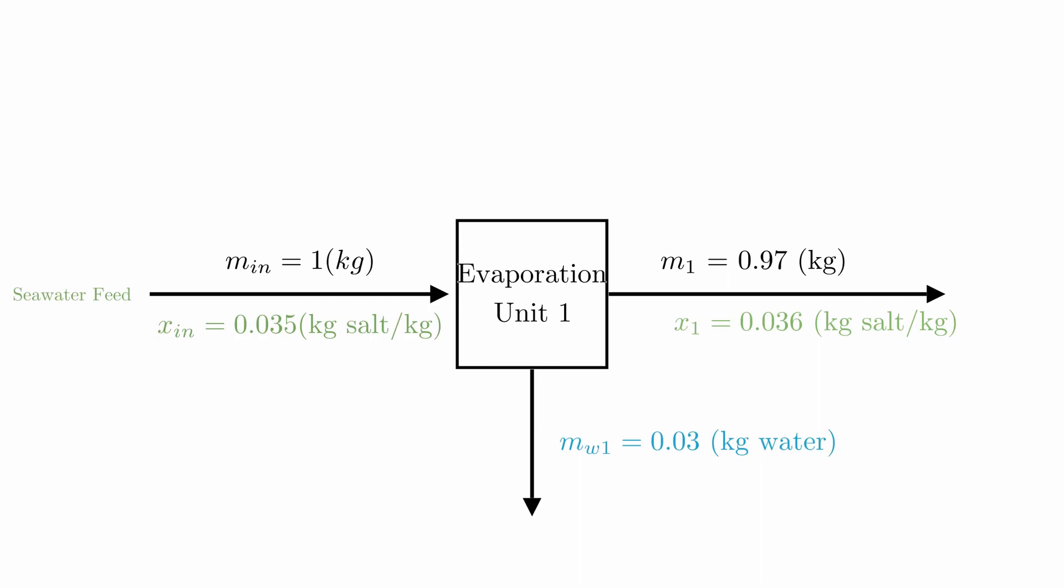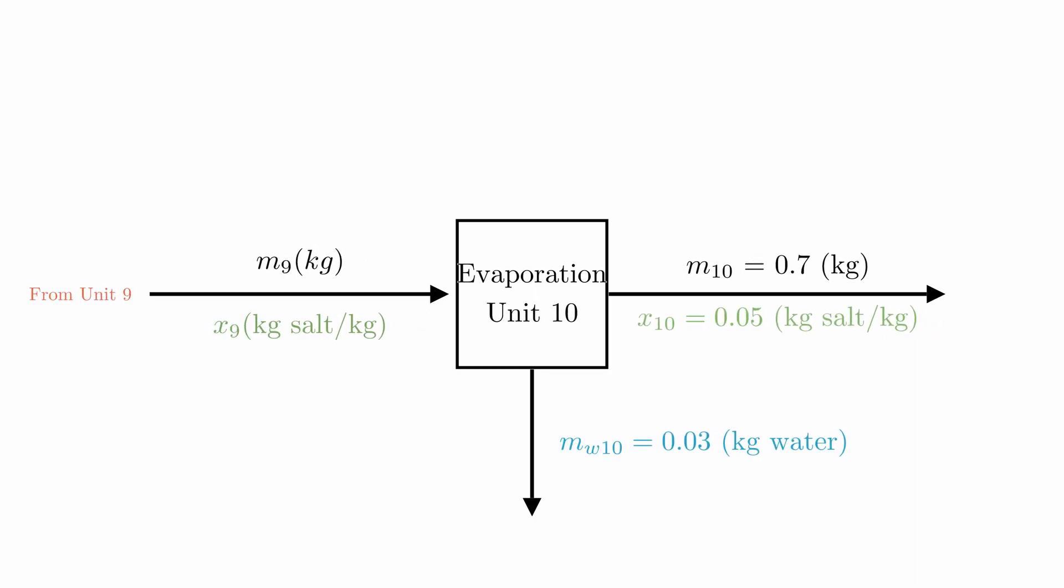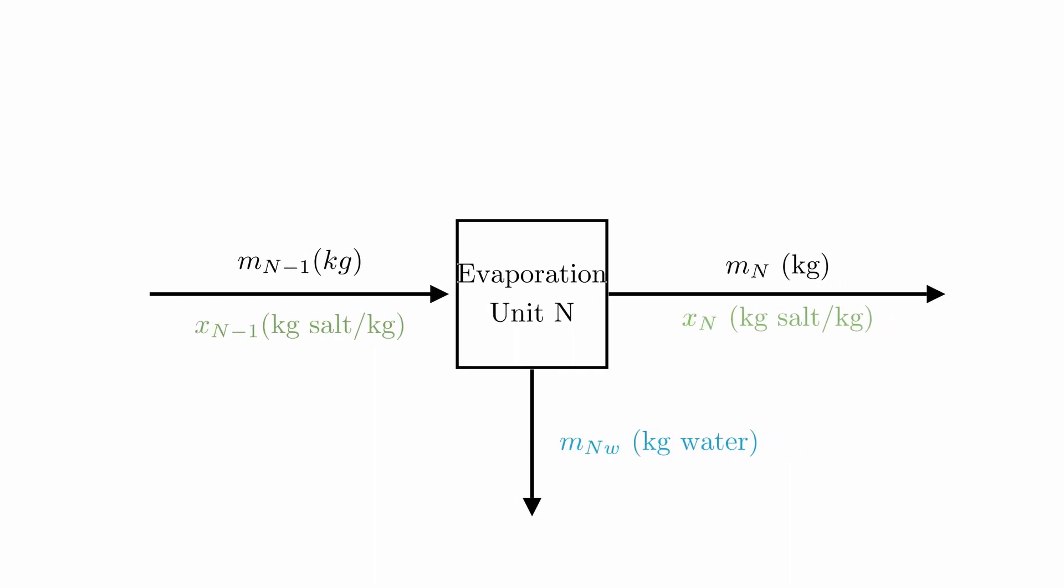In fact, we can actually write a general equation for the system. This is what it would look like for evaporation unit 1 and unit 10. And by writing a system mass balance for evaporation unit N, we can write a general equation for this system.